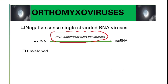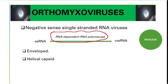These viruses have an envelope — remember that all negative-sense RNA viruses have an envelope. They also have a helical capsid — again, all negative-sense RNA viruses have a helical capsid. In general, RNA viruses replicate in the cytoplasm of the host cell, but we have two exceptions: the retroviruses and the Orthomyxo viruses. These two replicate in the nucleus of the host cell.